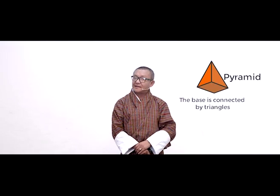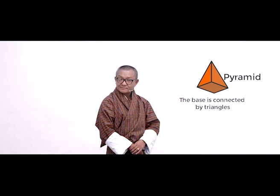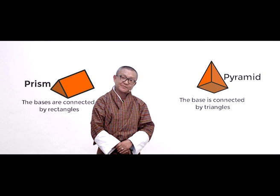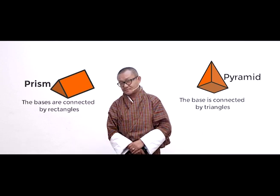In a pyramid, the base is connected by triangles. In a prism, the bases are connected by rectangles. Just as a pyramid is named by the shape of its base, a prism is also named by the shape of its base.